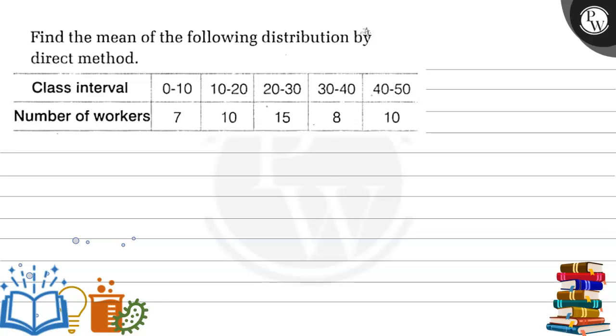Hello, let's read the given question. Find the mean of the following distribution by the direct method. The given distribution table is: for the class interval 0 to 10, the number of workers are 7; for 10 to 20, it's 10; for 20 to 30, 15; and for 30 to 40, 8.